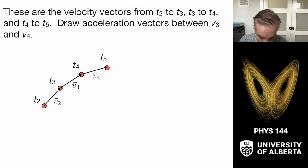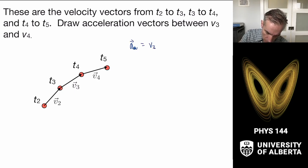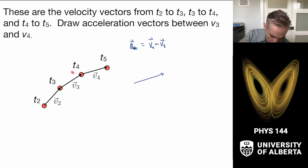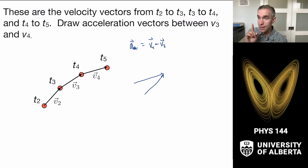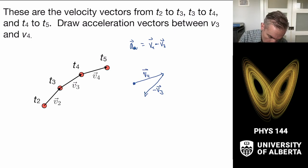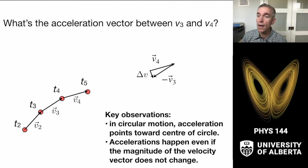Then what I want to do is find the acceleration vector between v3 and v4. The average acceleration between these two points is v4 minus v3. v4 is this vector here, and v3 is this vector here, but I want negative v3. So this is v4 plus negative v3, and the acceleration vector goes from the tail of one to the tip of the next. That gives us the average acceleration vector.